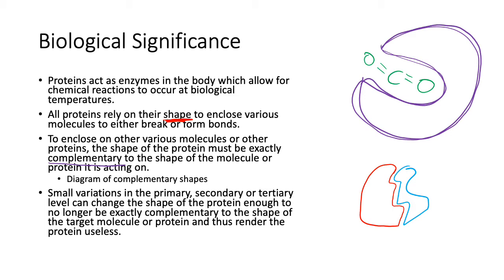Small variations in the primary, secondary, or tertiary level can change the shape of the protein. If you change the shape, it's no longer exactly complementary to the shape of the target molecule, and therefore it's useless. If it's not exactly the same shape, it's not going to be able to fit in, and if it can't fit in, then it's not going to do anything, and it's useless.